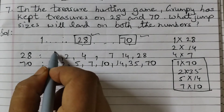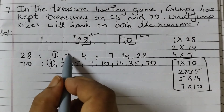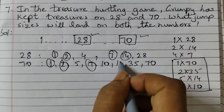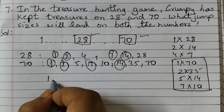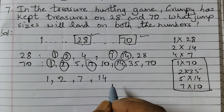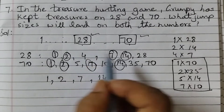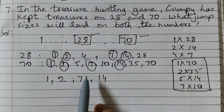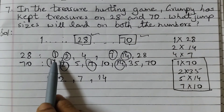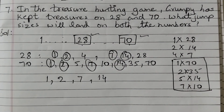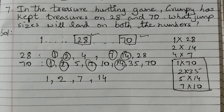Now we find the common factors of 28 and 70, which are 1, 2, 7, and 14. So if you choose a jump size of 1, 2, 7, or 14, you will land on both 28 and 70, because these numbers completely divide both 28 and 70. Hope this concept is clear. If you have any doubts, put them in the comment section. Thank you.